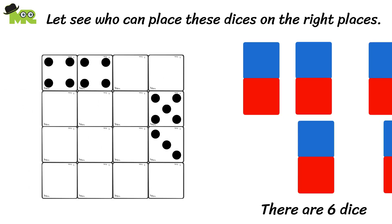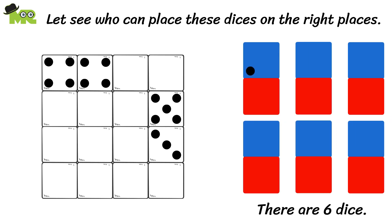in the right places. There are six dice. For the first dice we have two, for the second dice we have three, for the third dice we have one and two, for the fourth dice we have five and four.